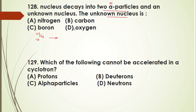It decays into two alpha particles, so we have two He-4 nuclei. The atomic number of neon is 10, and two alpha particles contribute atomic number 4 each, so the remaining atomic number is 6. The mass number is 22 minus 8 = 14. So the unknown element is Carbon-14. The answer is B.